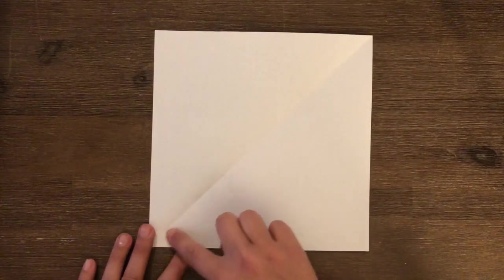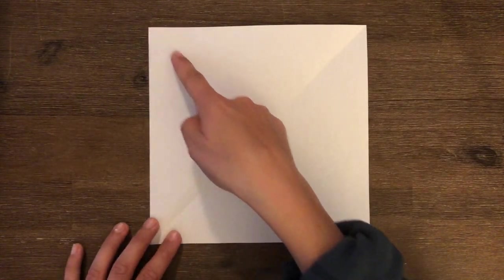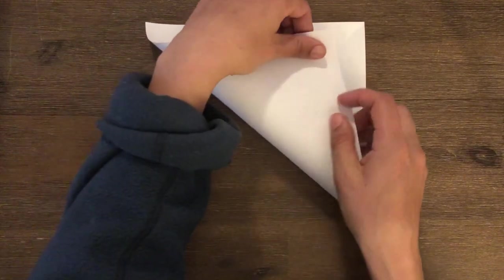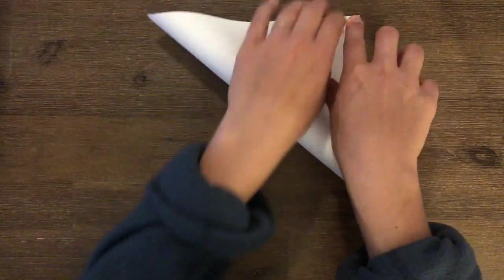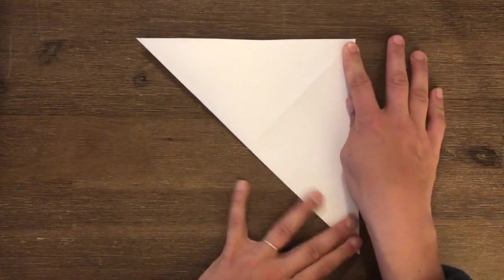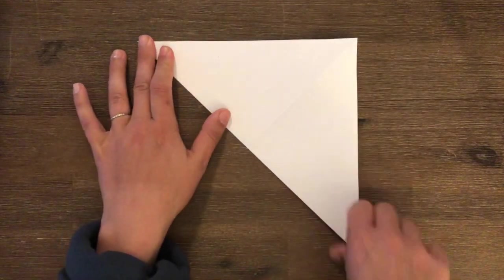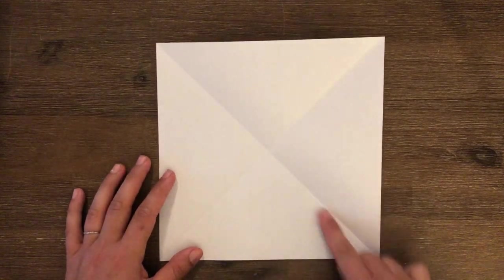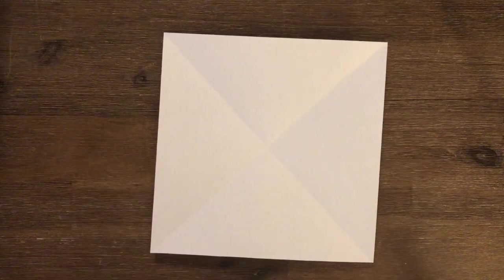And our square will have a line right down the middle where the triangle was folded. Now the first step we'll have to do is we'll have to fold our square the other way in half so that we have a line coming down like an X in the middle. So I'm going to take this corner and I'm going to fold it up to the next corner and I'm going to squeeze it down along the middle. So now when I open it up, I have my nice square and I have two folds right down the middle, making a nice X.